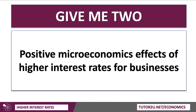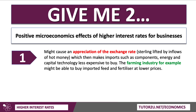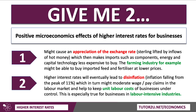There are some benefits to businesses at a micro level of higher interest rates, one of which is also a macro consequence. Higher interest rates can cause an appreciation of the exchange rate, perhaps caused by an inflow of hot money. A stronger pound makes imports less expensive — your components, energy, and capital technology might be cheaper to buy. A good example is farming: they might be able to buy imported feed and fertiliser from the EU or the US at lower prices. And higher interest rates, in theory, will help bring about disinflation, which can help moderate wage and pay claims in the labour market, particularly for businesses that use a lot of labour such as hospitality and tourism.